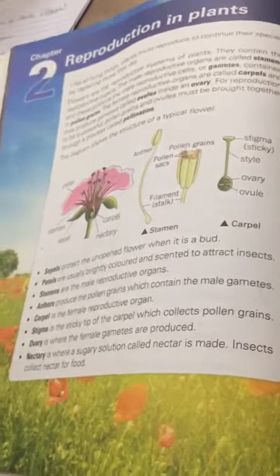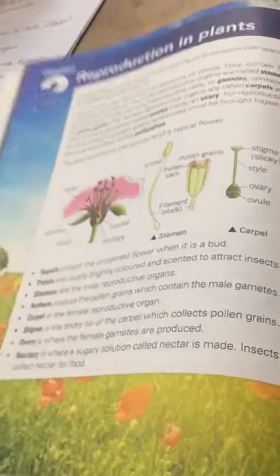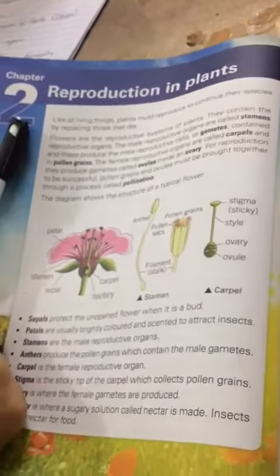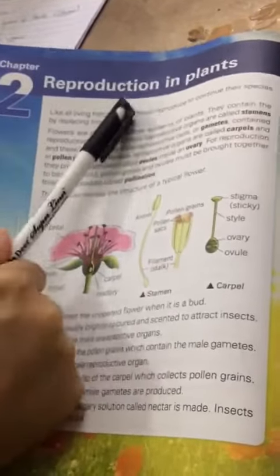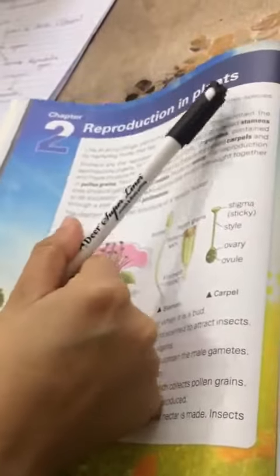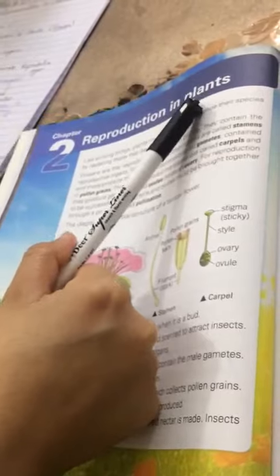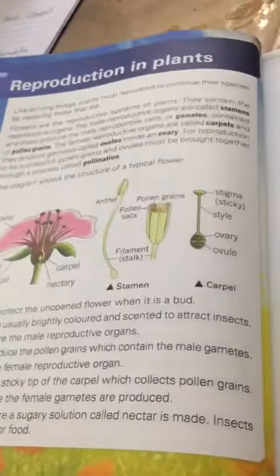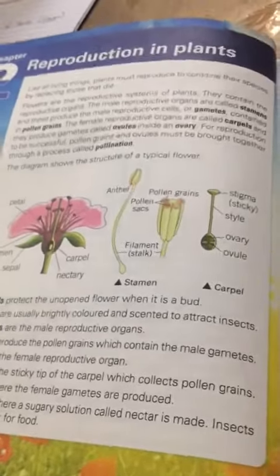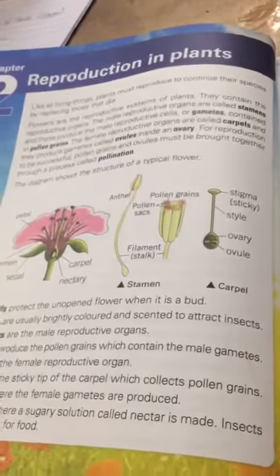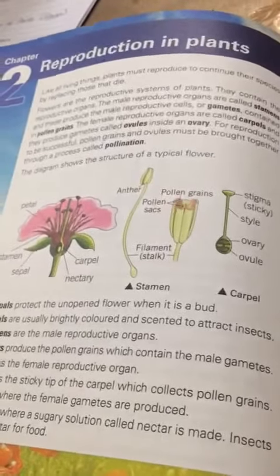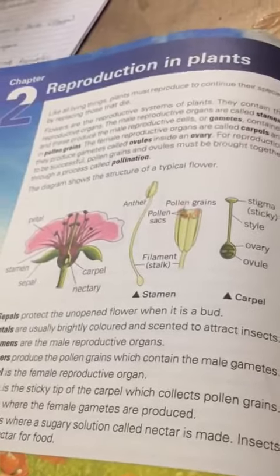Assalamu alaikum class, hope you all are doing well. Today we are going to start chapter number two of biology, which is the reproduction in plants. First of all, you all should know what reproduction actually is. Reproduction is the biological process by which new individuals are produced from their parents.